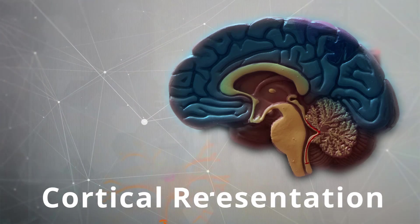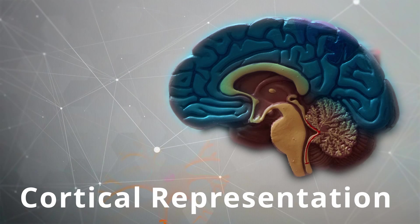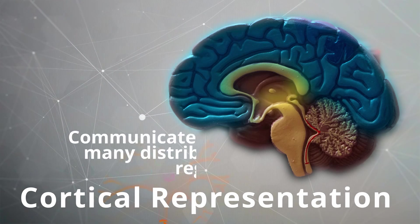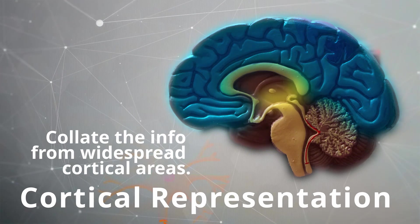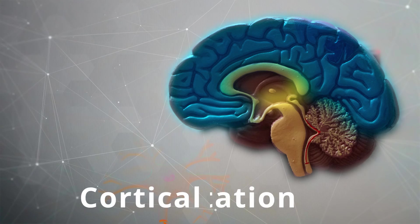This is essentially a cortical representation of a memory. Therefore, the hippocampus has to communicate with many distributed regions of the cortex and to collate all of the information from these widespread cortical areas.